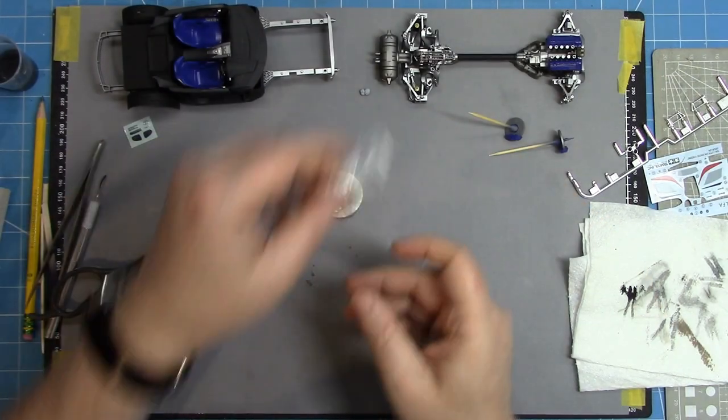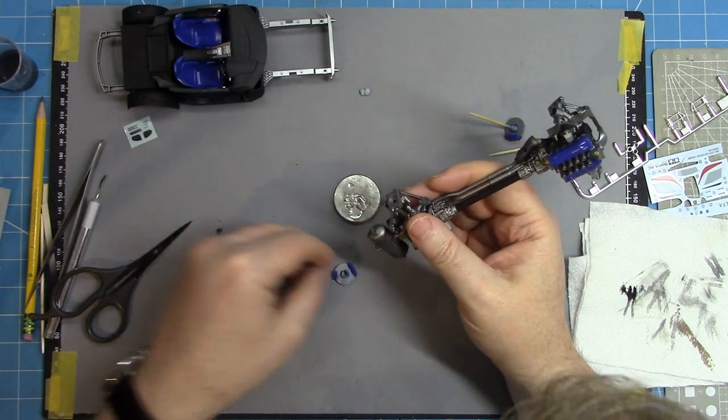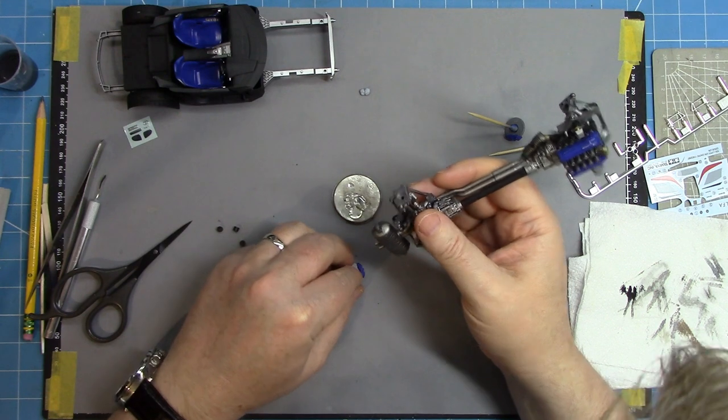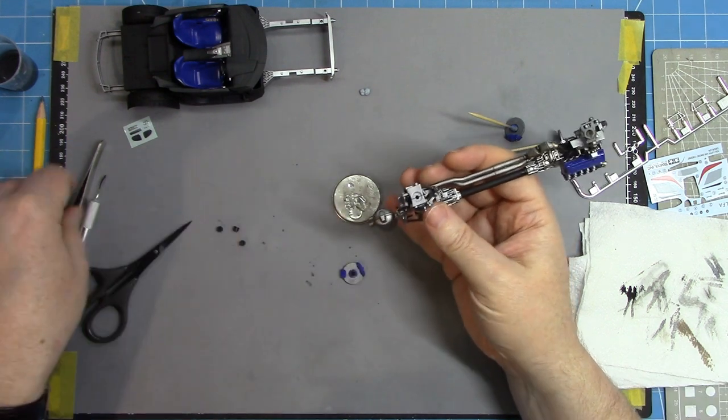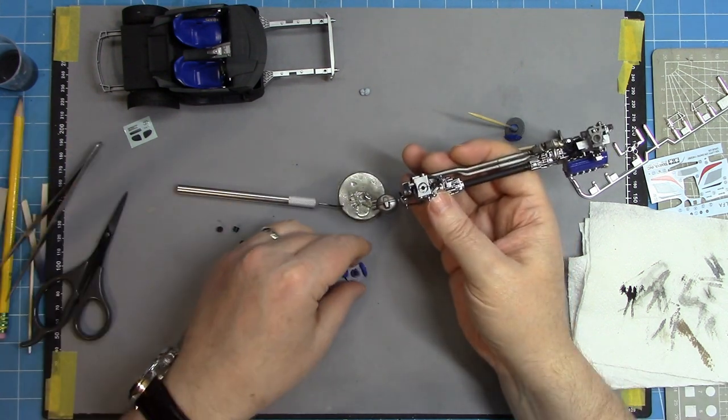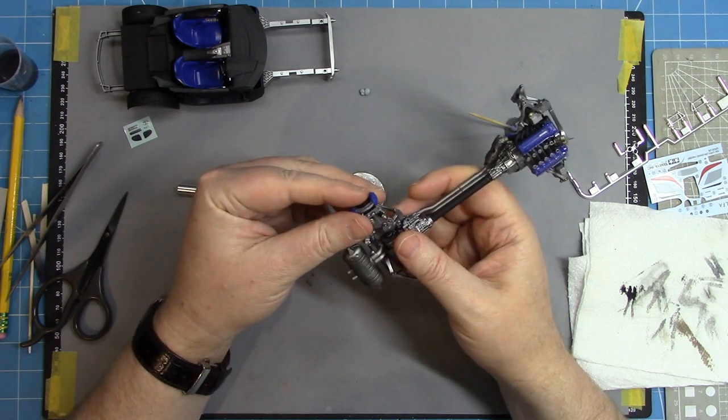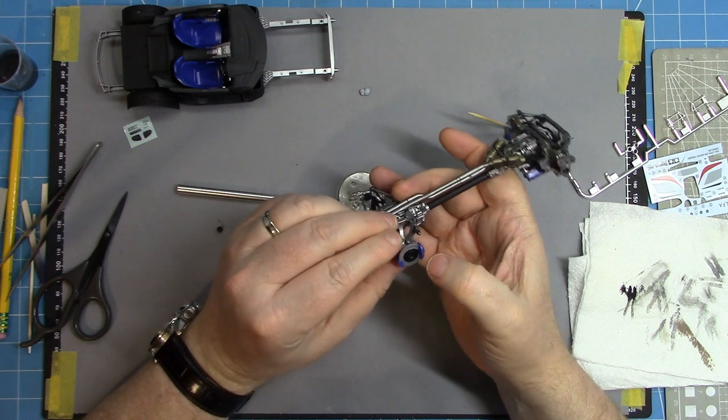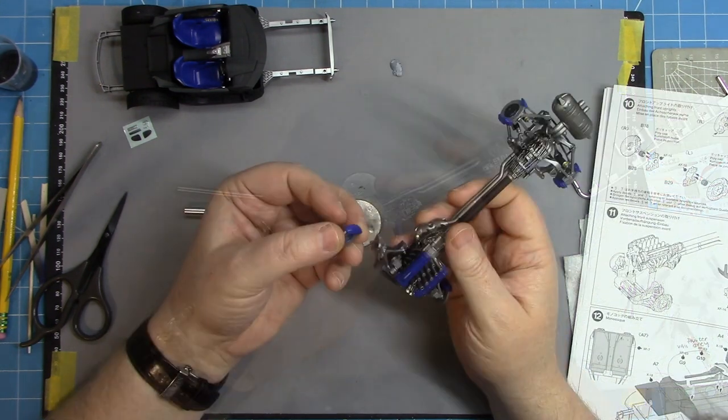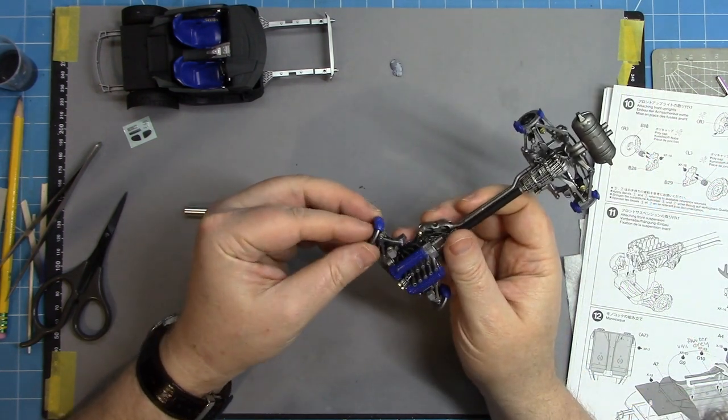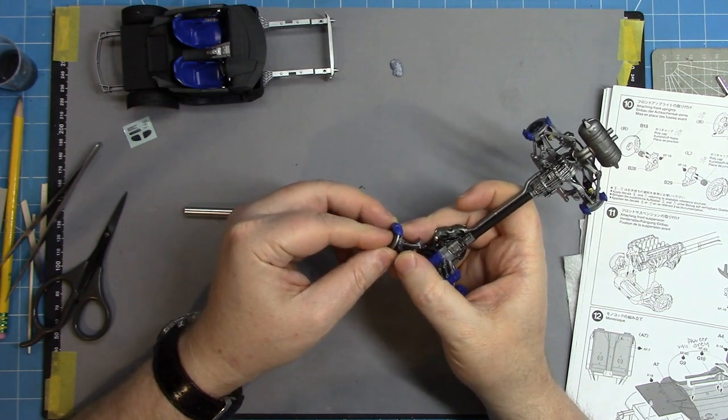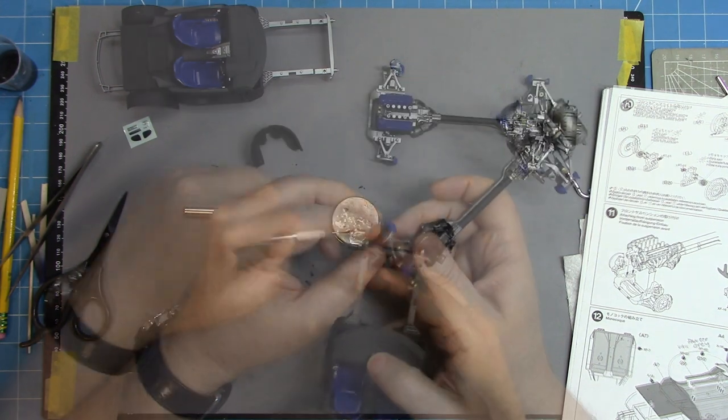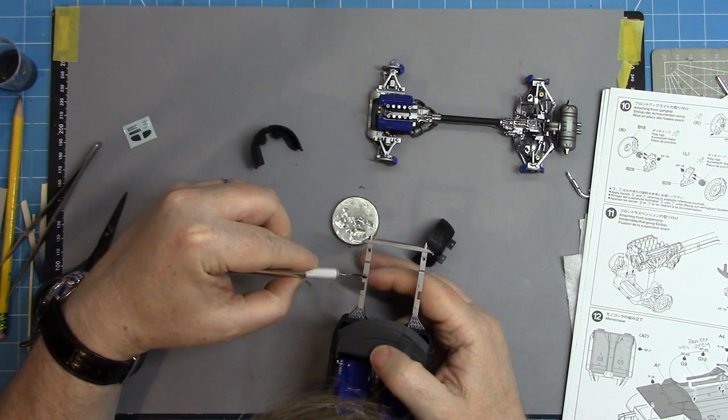To attach the brake disc, of course you need to add the poly caps. They go into the brake discs, into the back, and then a bit of CA glue to attach the brake disc to the hubs. Obviously you need to check that you've got the right orientation of the brake disc, the right sides, etc., but just follow the instructions. It's reasonably straightforward, and all four brake discs are added to the running gear.